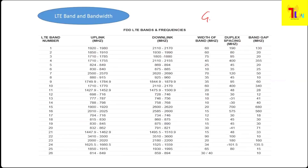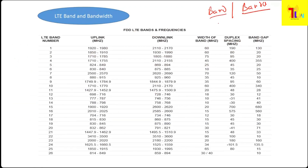The government assigns you the band and they assign you the bandwidth. When they assign the band, they actually assign the ARFCN — from ARFCN number this to ARFCN number this they assign.